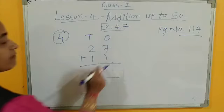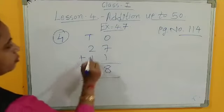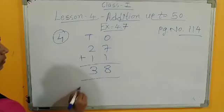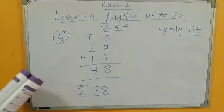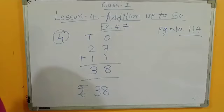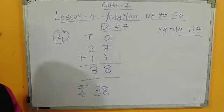So total 7 plus 1, after 7, 8. 2 plus 1, after 2, 1, 3. So total rupees 38. So this is exercise 4.7 also complete here. Here lesson number 4, complete.